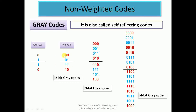Taking the 2-bit gray codes 00, 01, 11, 10, we again assume a mirror. The mirror images are reflected below, and above the mirror we place 0 as prefix, below the mirror we write 1 as prefix. This constitutes the 3-bit gray codes: 000, 001, 011, 010, 110, 111, 101, 100. Similarly we can construct 4-bit gray codes. Since the lower codes are the mirror image of the upper codes, that is why they are termed self-reflecting codes.